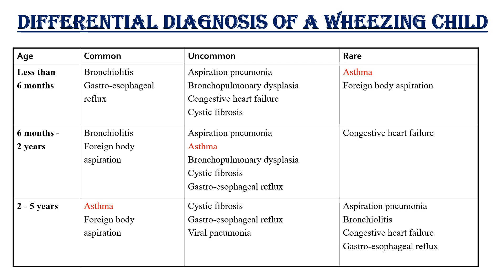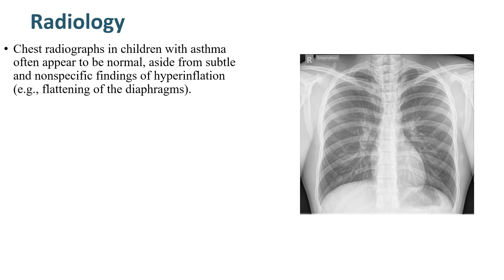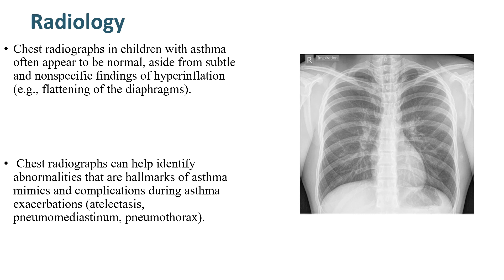When considering the differential diagnosis of a wheezing child, we should consider the age of the child. For children less than 6 months, the most common cause of wheezing is bronchiolitis and gastroesophageal reflux, while asthma is a rare cause. For 6 months to 2 years, the most common etiologies are bronchiolitis and foreign body aspiration; asthma is uncommon. In 2 to 5 years, the most common causes are asthma and foreign body aspiration. On radiology, chest radiographs in children with asthma often appear normal, aside from subtle nonspecific findings of hyperinflation, but can help identify findings that are hallmarks of asthma mimics or complications during exacerbation.